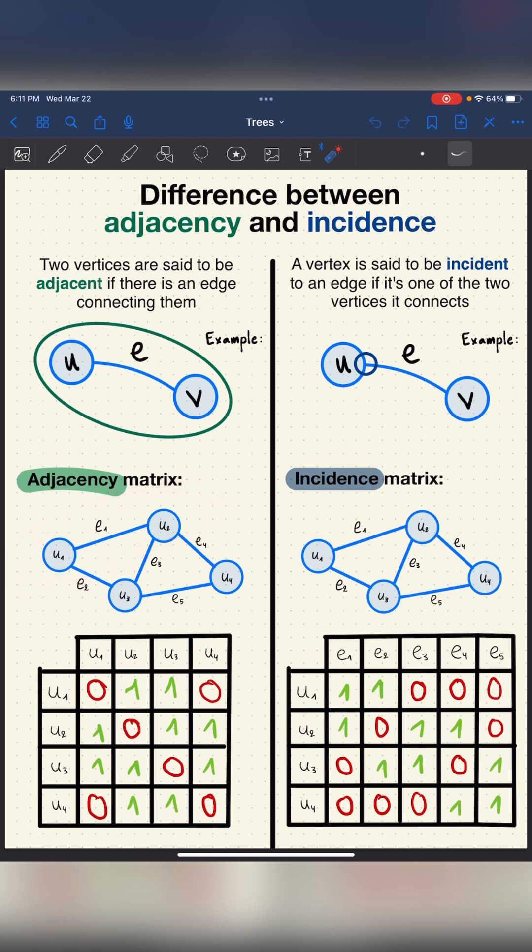But for incidence, it occurs between a vertex and an edge. A vertex is said to be incident to an edge if it's one of the two vertices it connects. For example here we have an incidence between u and e, we also have one between v and e.